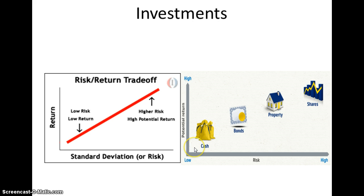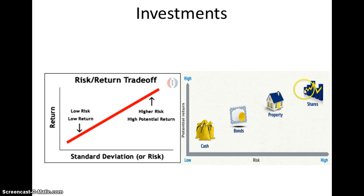This diagram gives us some ideas. Cash at the bank: low risk, low return. Bonds: a little bit higher. Property — especially in light of our recent mortgage crisis — carries a little bit higher risk, but also a little higher return. And then shares, so the stock market, represent our higher risk and higher return.